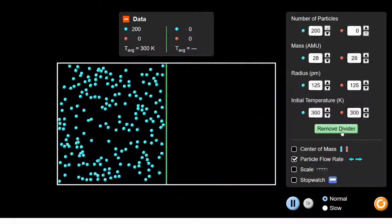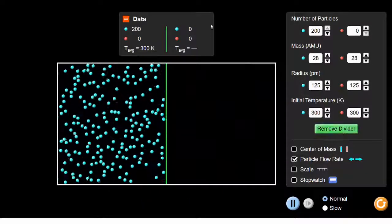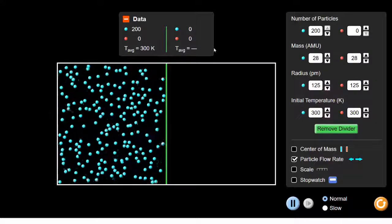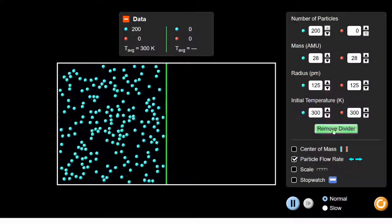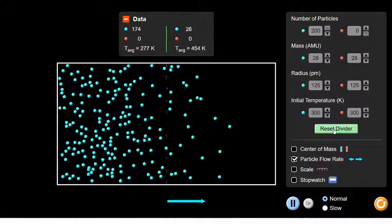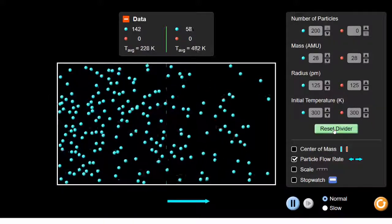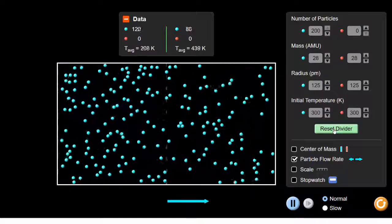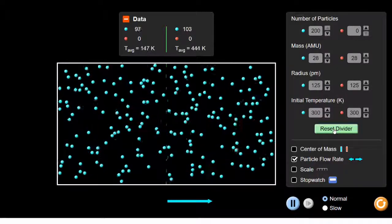Let's watch that again. This time, watch the data box at the top, which shows how many particles are on each side. As long as there are more particles on the left, the chances of a left-hand particle moving right outweighs the chance of a right-hand particle moving left, so the right-hand flow arrow is bigger.